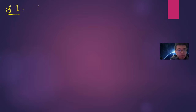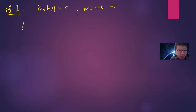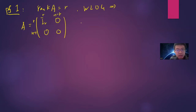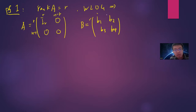Proof one: assume rank(A) = r. Without loss of generality, I can assume A is the block matrix with identity I_r in the top-left and zeros elsewhere — size r×r and (n−r)×(n−r). You can prove this by just changing your basis, since rank(A) = r. Then write B as a block matrix B1, B2, B3, B4 of appropriate sizes.